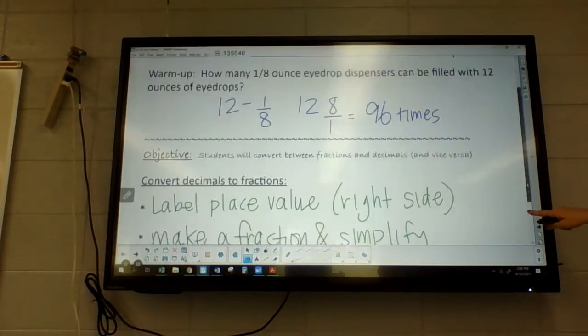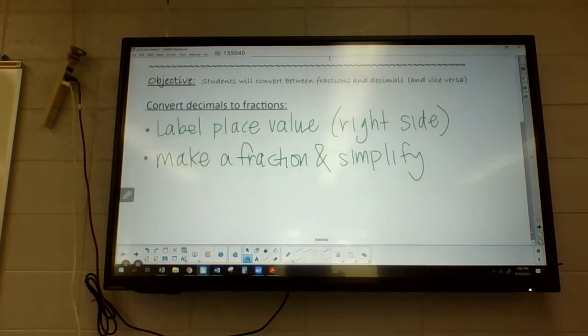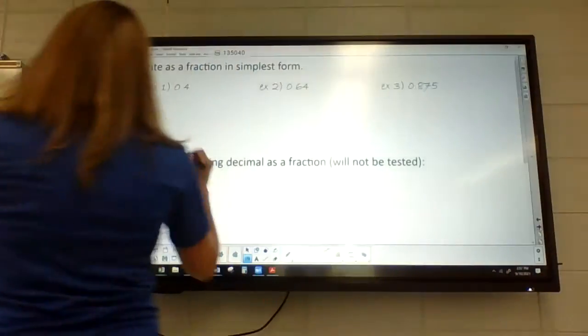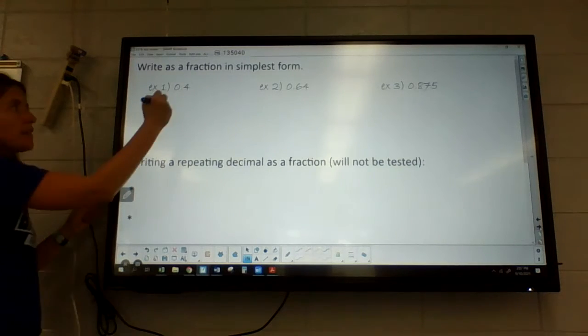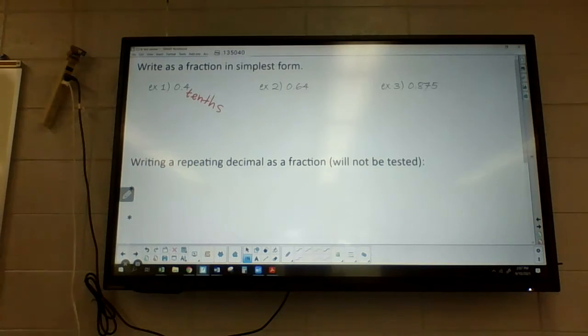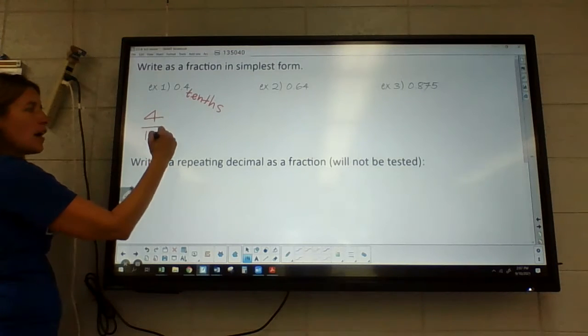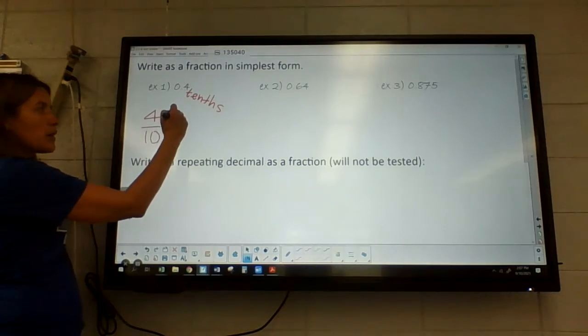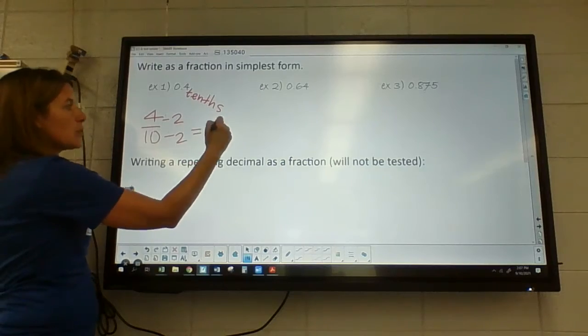So our place value, remember it goes tenths, hundredths, thousandths when we're in the decimal places. When you say a tenth, I'm hoping you think of that as a fraction, it's one tenth. So when we're doing this, this four is in the tenths place. There's no ones place, this is the tenths place. So we say four tenths, so I just write that as a fraction. Whatever is the furthest decimal place to the right, we call that, like whatever the decimal place is, and we just make that into a fraction. So four tenths, you can put that in your calculator or you can just simplify it by dividing by two, so we get two fifths.